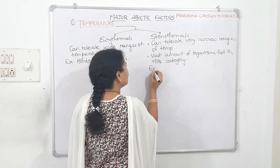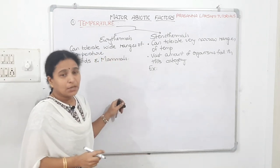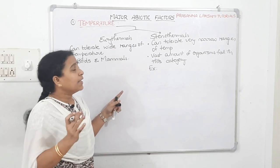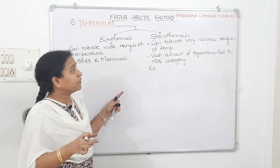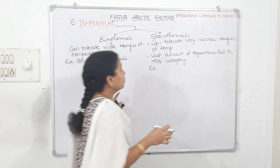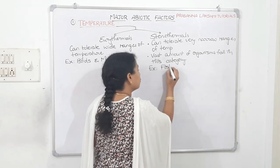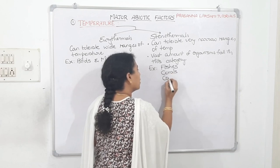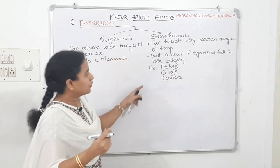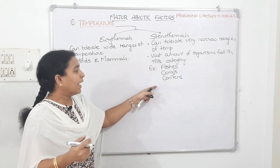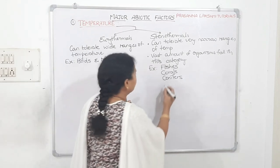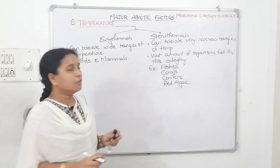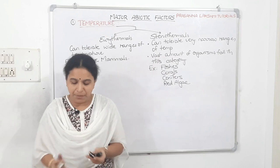Examples of eurythermals include birds and mammals. Examples of stenothermals include fishes, corals, conifers, and red algae, which can tolerate only a very narrow range of temperatures. The vast majority of organisms fall under the stenothermal category.